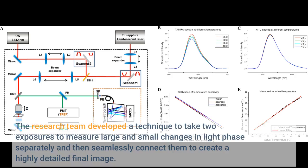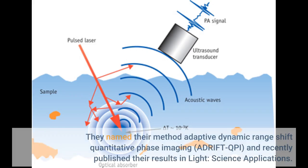The research team developed a technique to take two exposures to measure large and small changes in light phase separately and then seamlessly connect them to create a highly detailed final image. They named their method Adaptive Dynamic Range Shift Quantitative Phase Imaging, or Adrift QPI, and recently published their results in Light: Science & Applications.